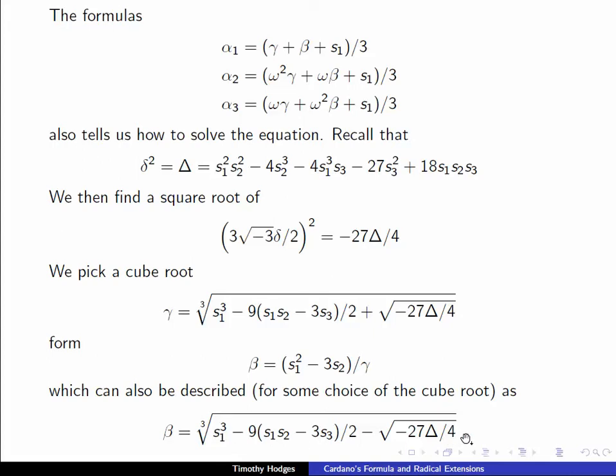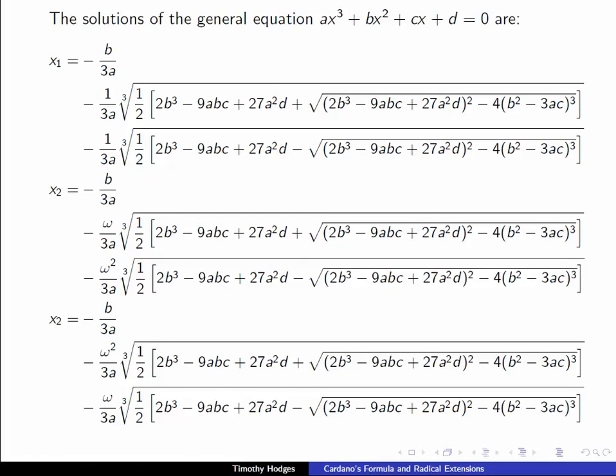And combining all this and these formulas, α₁ = (γ + β + s₁)/3, etc., gives us some very explicit formulas for the roots. And I've actually generalized this to the case where the polynomial is not monic and played around with it a little bit. But it's only a little more work to show you that these formulas are the completely general versions of Cardano's formula for the solution of the general cubic equation.